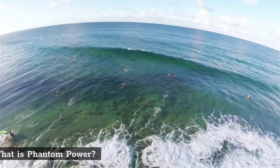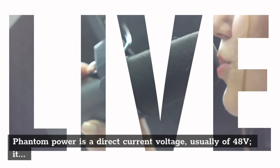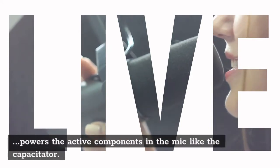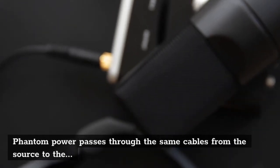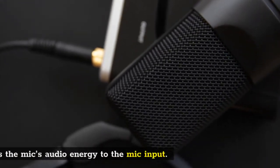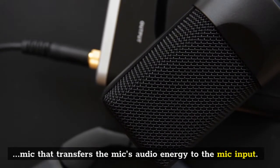What is phantom power? Phantom power is a direct current voltage, usually of 48 volts, that powers the active components in the mic like the capacitor. Phantom power passes through the same cables from the source to the mic that transfers the mic's audio energy to the mic input.